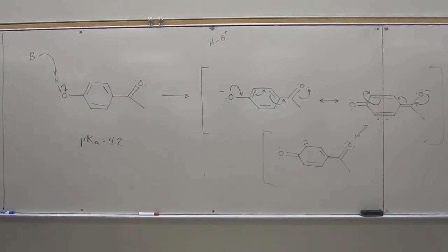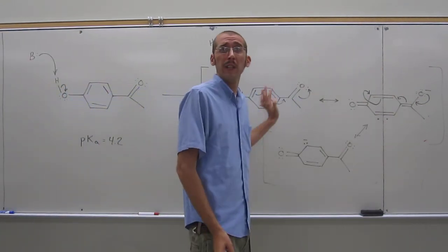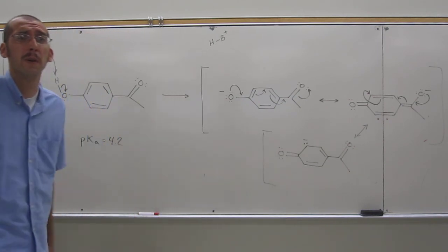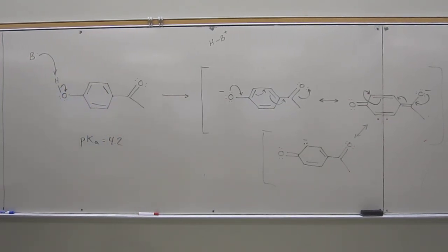So is everybody cool with that? So there's definitely more resonance structures. Just figure them out on your own. So again, it's why is this so acidic? Because the conjugate base is stable because it's got a lot of resonance structures. So everybody cool? Any questions? Okay, good. Thanks.